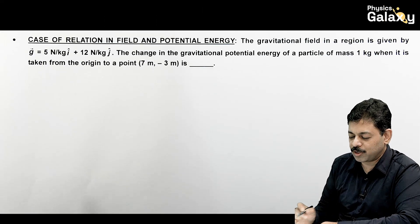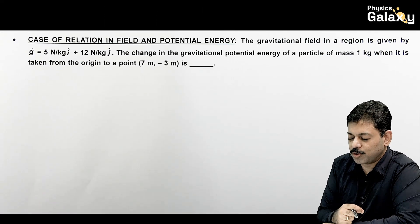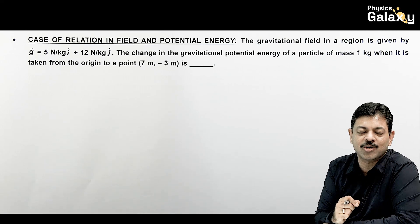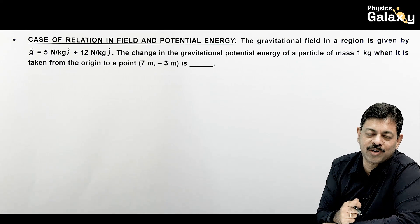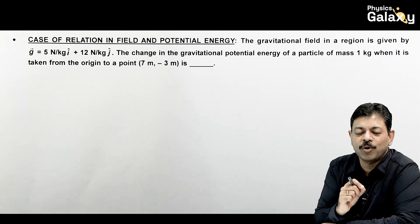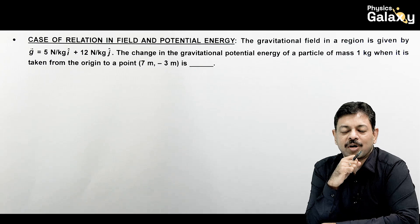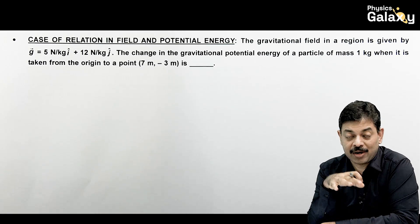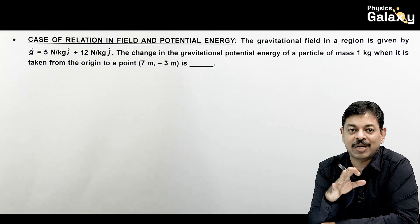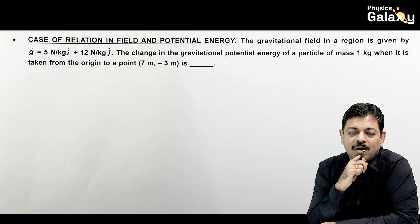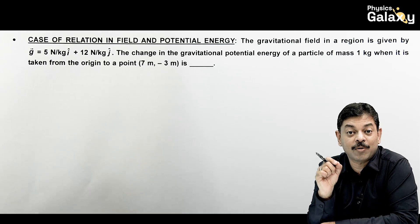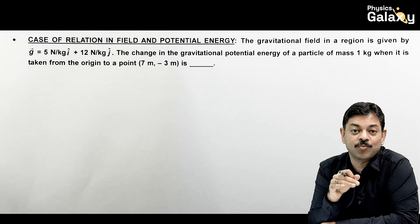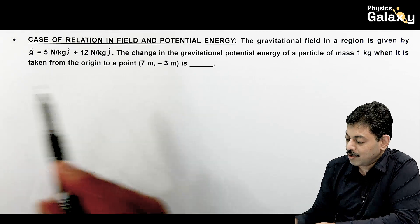Let's talk about the relation between field and potential energy. It is a similar situation in electrostatics. When we take a particle from one point to another, the work done is calculated as mass multiplied by gravitational field, and this gives the total work done which equals the change in potential energy.